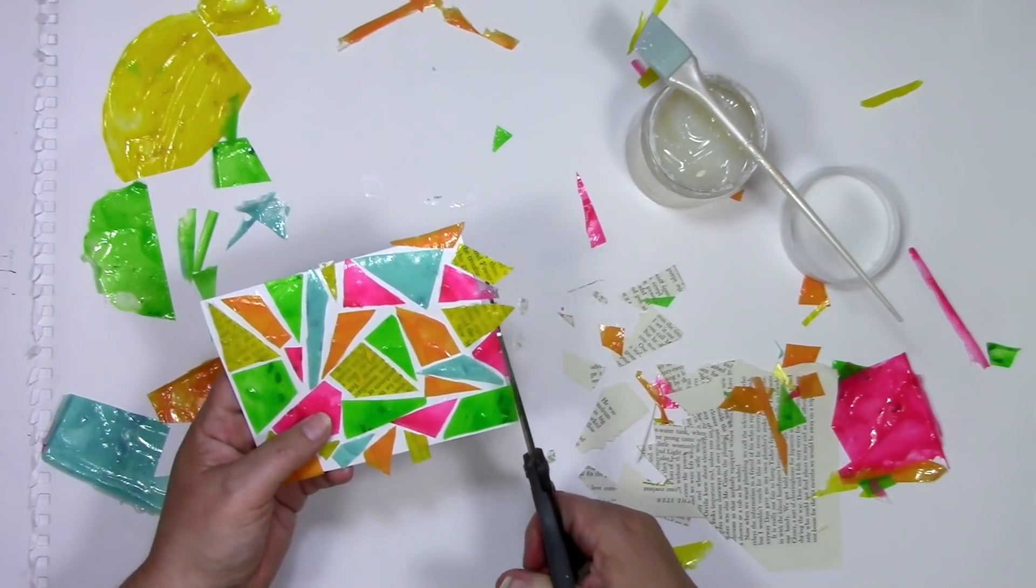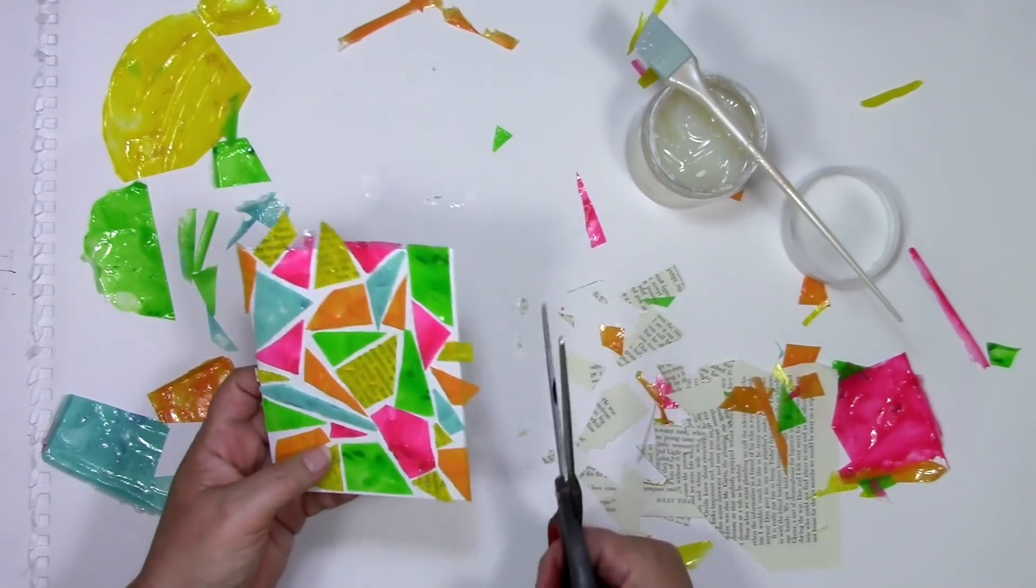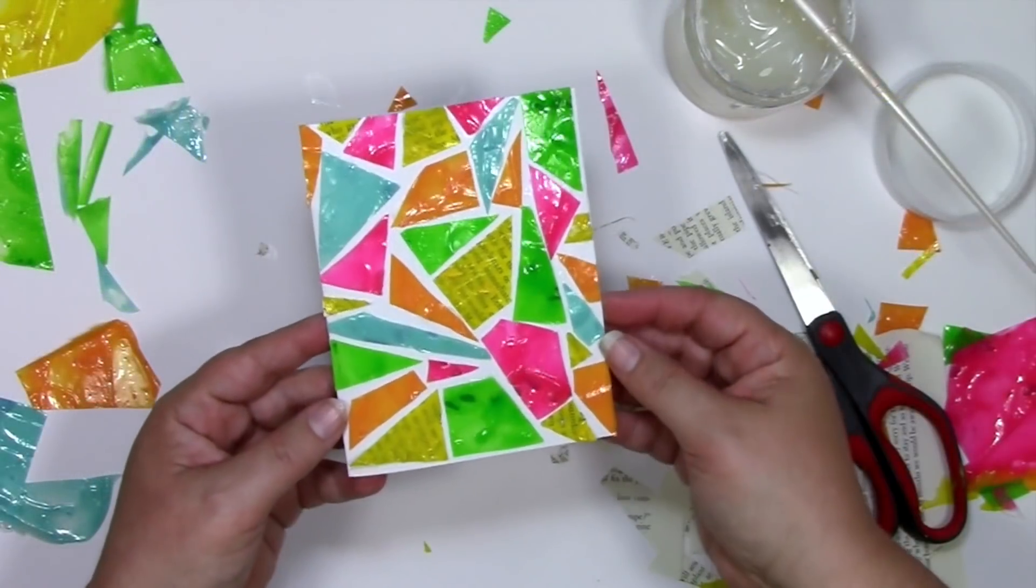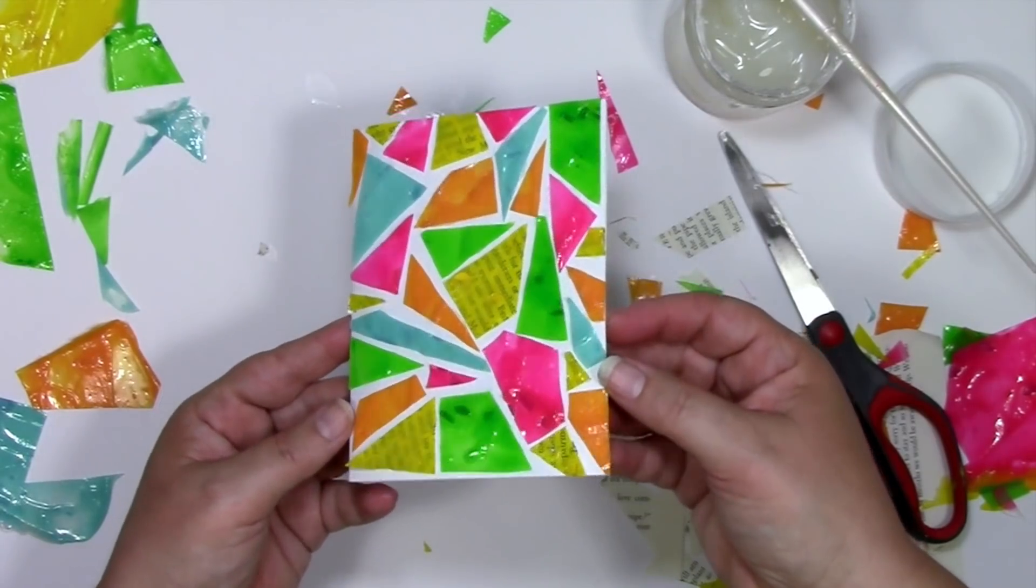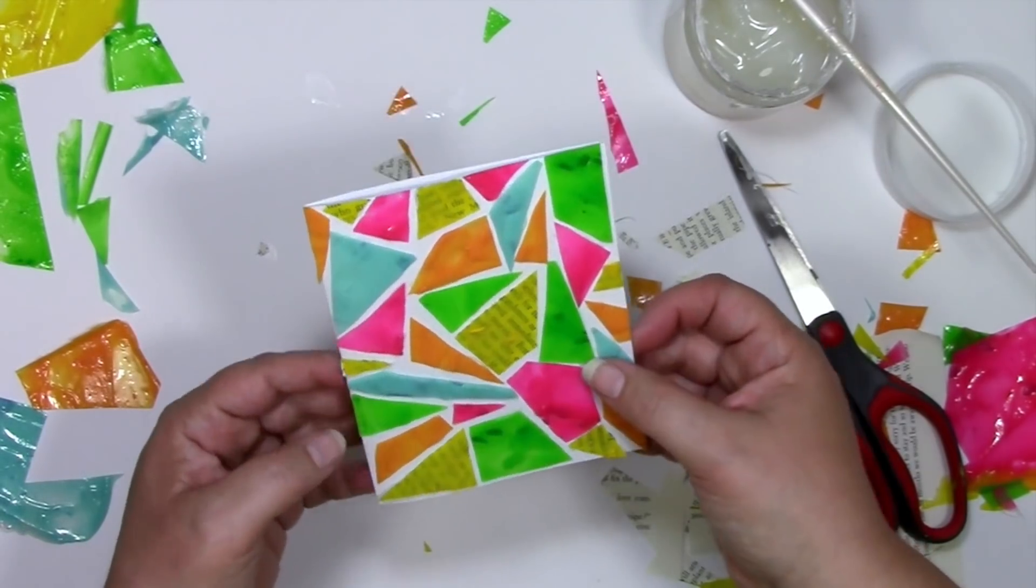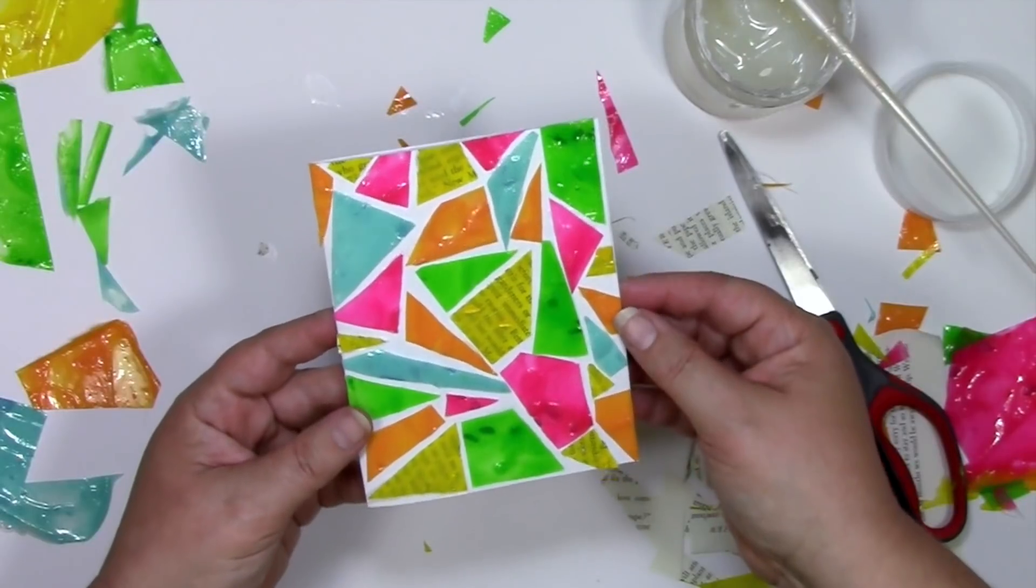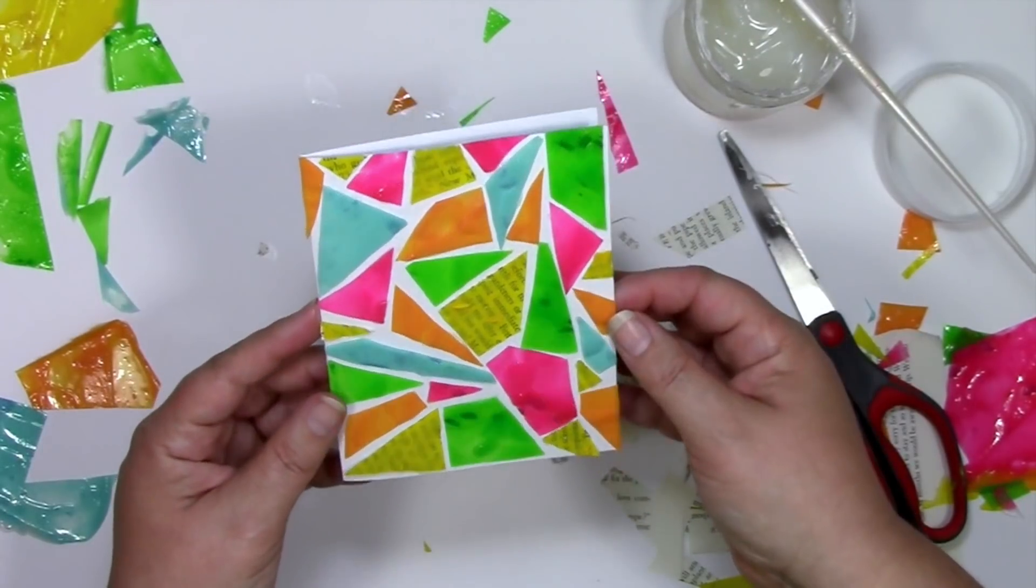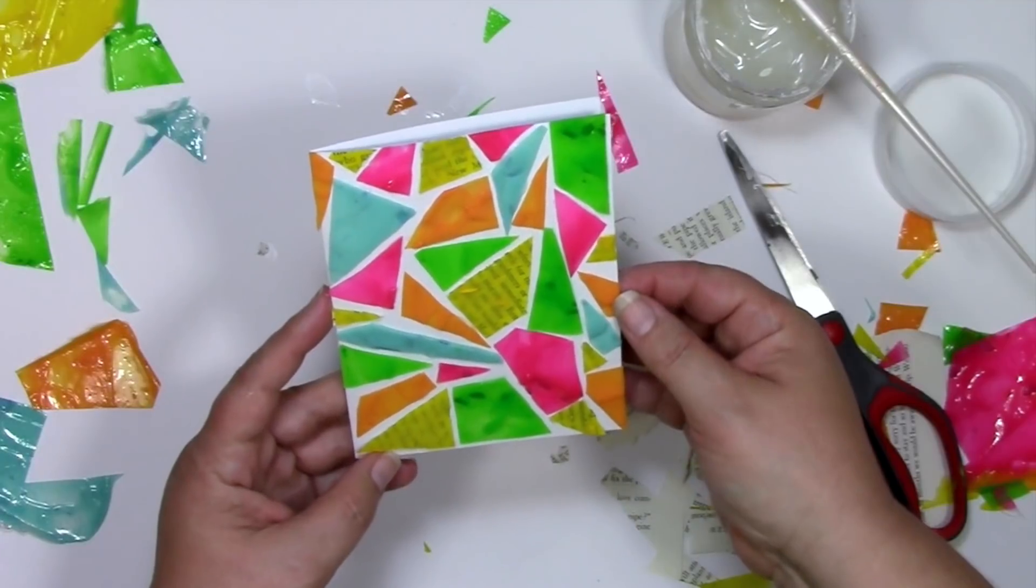I'm going to trim up the edges with a pair of scissors once everything is completely dry. And here's what the card looks like, all done. All that wonderful, shiny, glassy texture in there. And then you can see the words underneath the yellow pieces. Well, thanks so much for joining me for today's play with honey medium and gelatos.